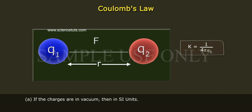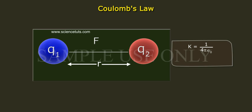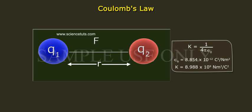K is equal to 1 by 4π epsilon naught, where epsilon naught is the permittivity of space. The value of epsilon naught is equal to 8.854 into 10 power minus 12 coulombs square per newton-meter square, which was obtained by experiments. Thus K is equal to 8.988 into 10 power 9 newton-meter square per coulomb square.